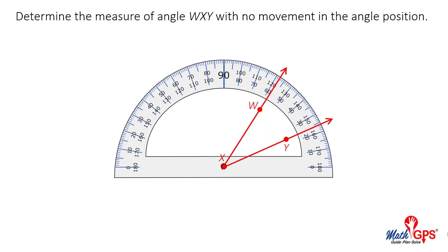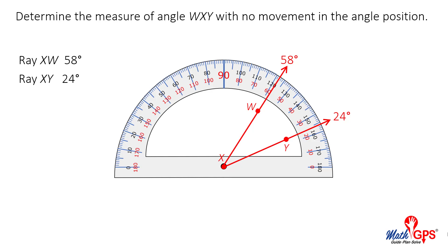Determine the measure of angle WXY with no movement in the angle position. If the tick marks are read from zero degrees to 180 degrees in a counterclockwise direction, ray XW passes through 58 degrees and ray XY passes through 24 degrees. If we subtract, the difference is 34 degrees.